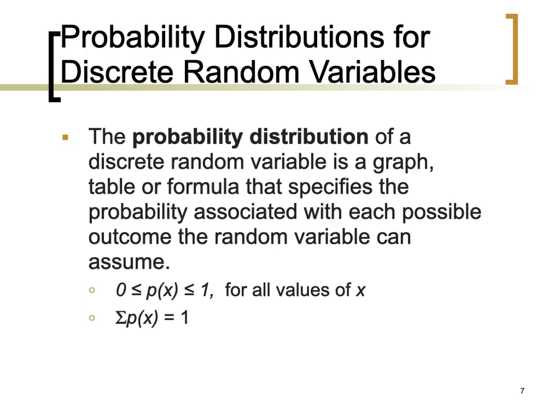We will now extend this to probability distributions for discrete random variables. A probability distribution of a random variable may refer to a graph, a table, or a formula that specifies the probability associated with each possible outcome the random variable can assume.